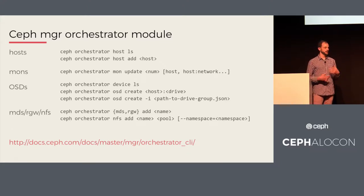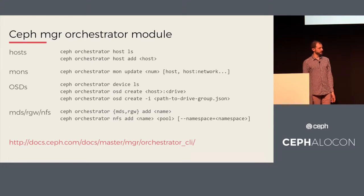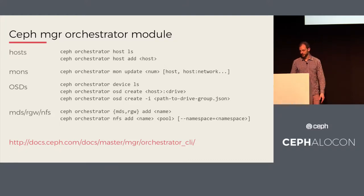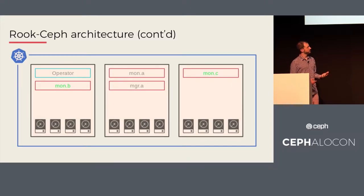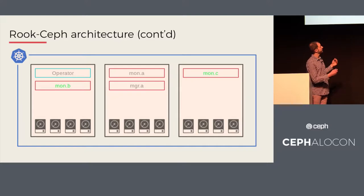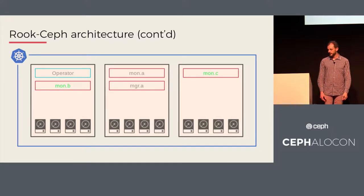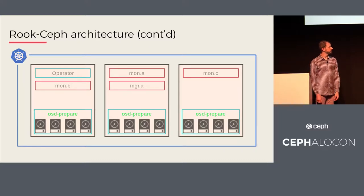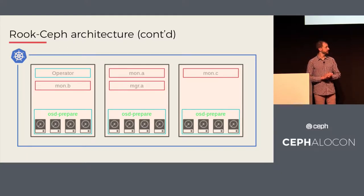Using the orchestrator module, we can list and add hosts, add monitors, list disks and add those disks, and add other daemons as we see fit. The first step is adding more monitors, since we want better than a single monitor. Rook creates these monitors, placing them on separate nodes for failure domain purposes, and they run as deployments. From there, we can list and create OSDs. Rook creates OSD preparation jobs run as jobs on whichever hosts have disks.